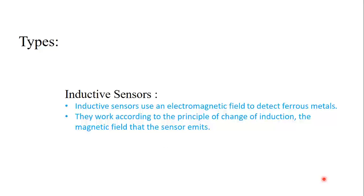The first one is the inductive sensor. Inductive sensors are used for the detection of metallic objects. If there is any metallic object nearby, the inductive sensor has a magnetic field around it. If a metallic object comes near, it causes a change in the magnetic field, and this change of induction allows the inductive sensor to sense that object.